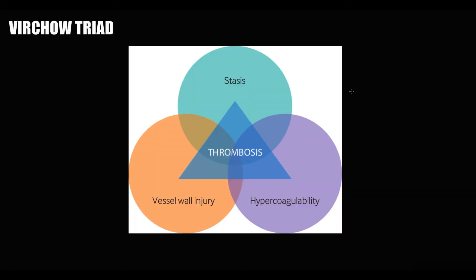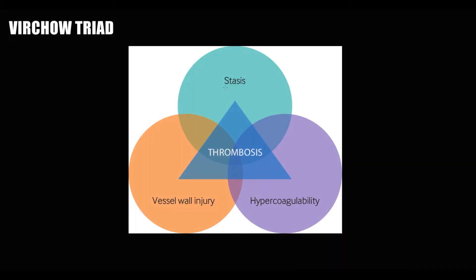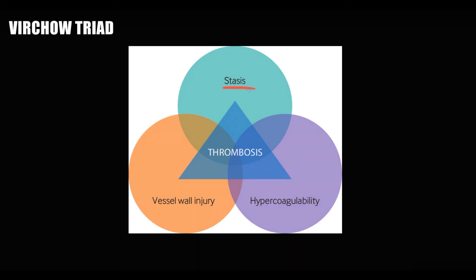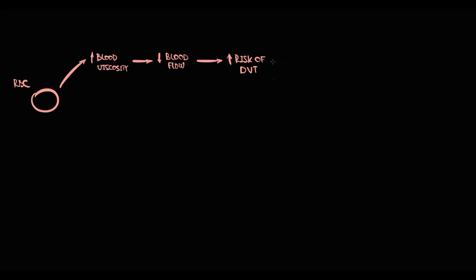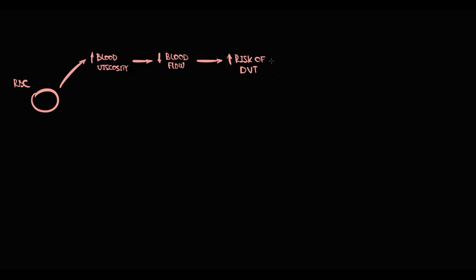The major problem is that with decreasing blood flow, the risk of venous thrombosis increases. Recall Virchow's triad — decrease in blood flow, or stasis of the blood, is one of the three major criteria that contribute to deep venous thrombosis. So in polycythemia vera, because the amount of red blood cells is huge and blood viscosity is high, the risk of deep venous thrombosis is very significant. The most common sites are the lower extremities and the hepatic or portal veins.